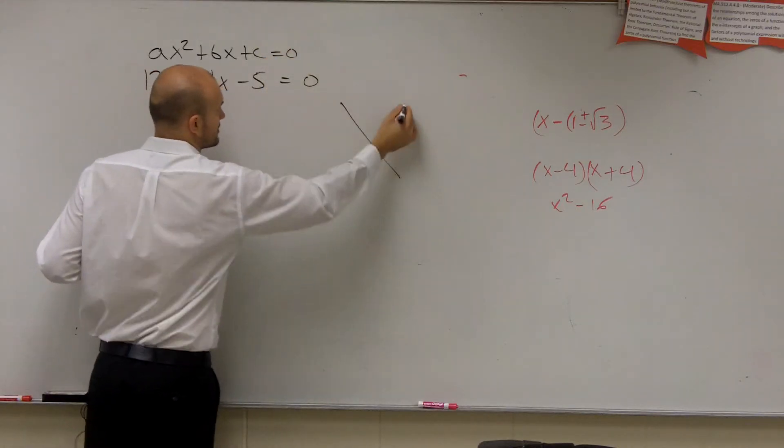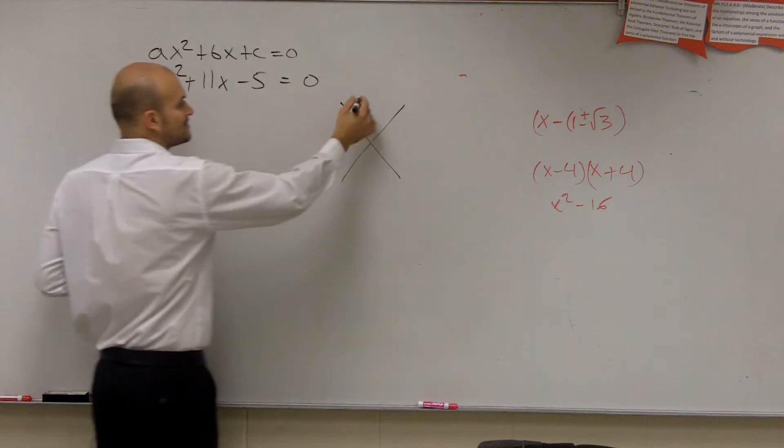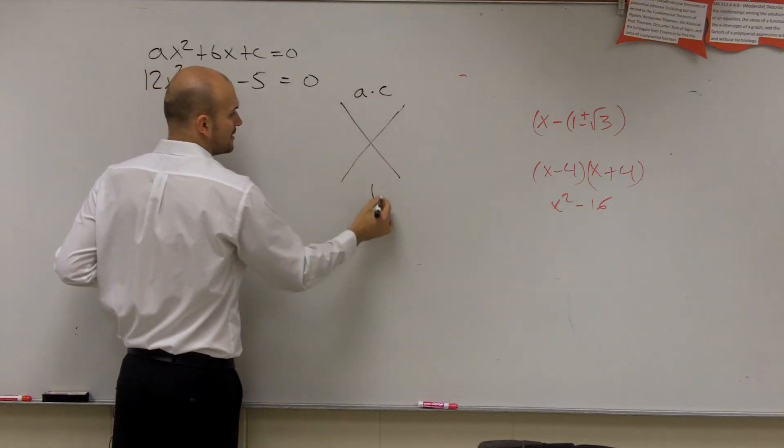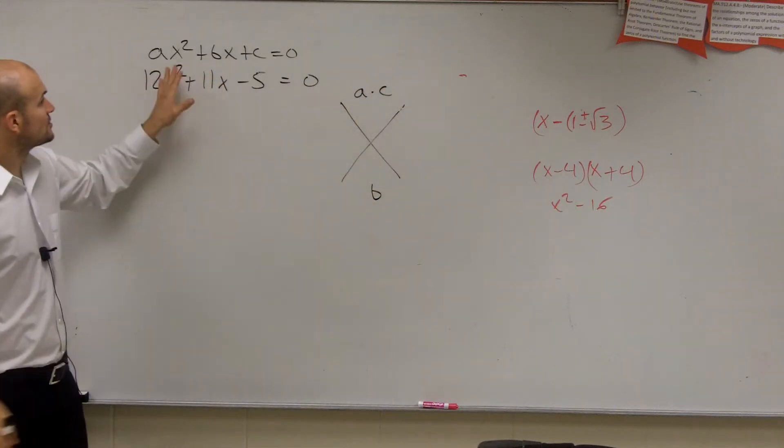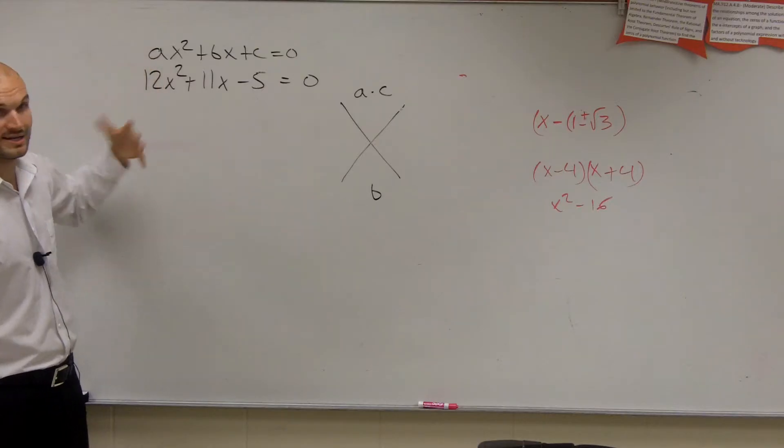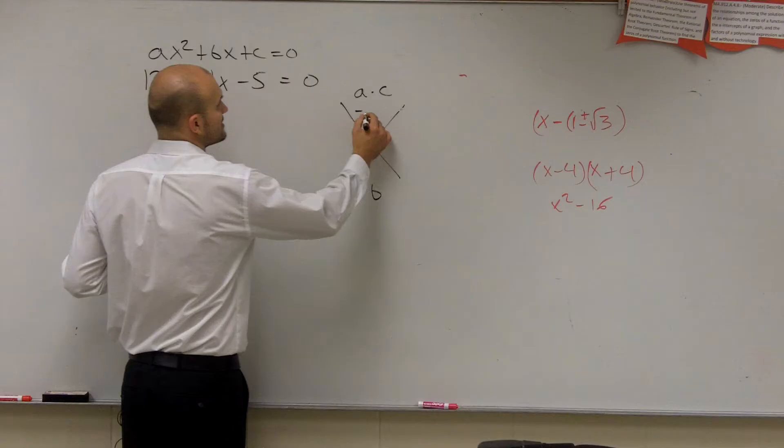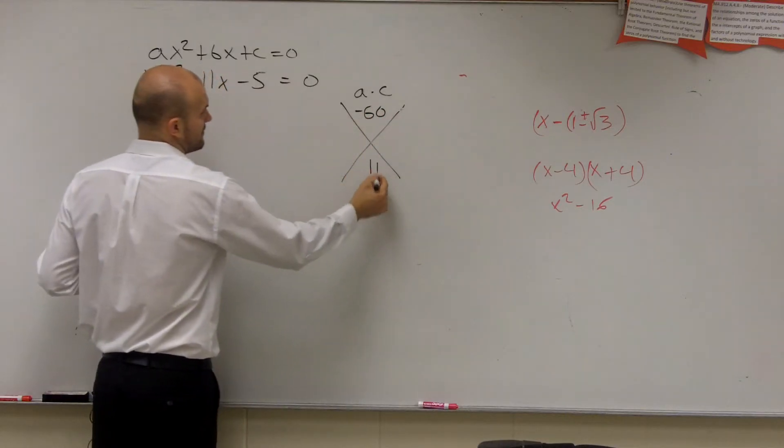When you have it in quadratic form, I always like to use this little x, where up top of the x I do a times c, and on the bottom I put my b. So since we have a is greater than 1, it's going to be really important to follow this. So 12 times negative 5 is negative 60, b is just 11.